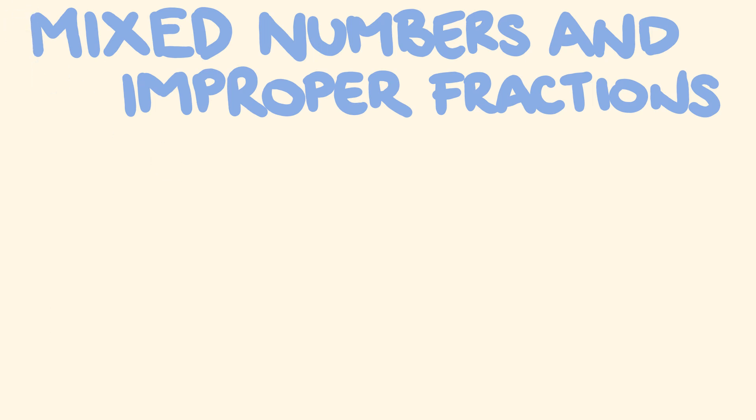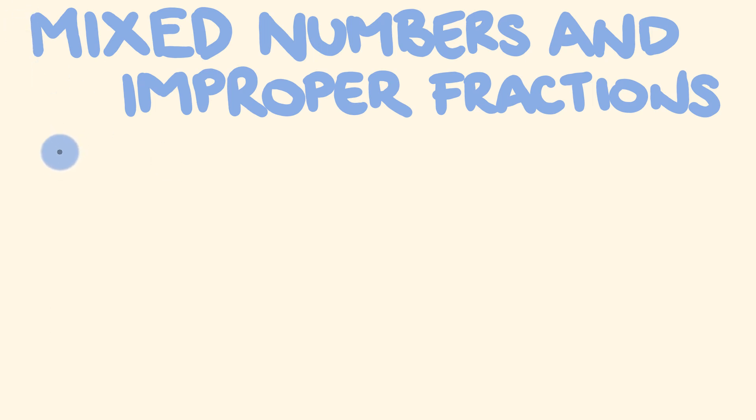What about a few examples for you to do? So change these across to their equivalent form, either a mixed number or an improper fraction. What about we do 4 and 2 fifths and change it into the improper fraction. What about 16 out of 3 and we'll change it into the mixed number. And what about 9 and 2 over 3?